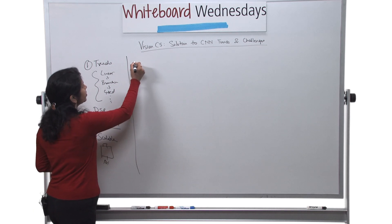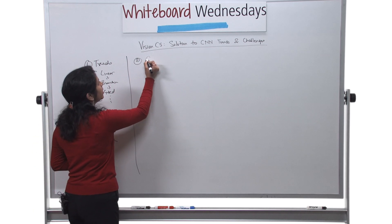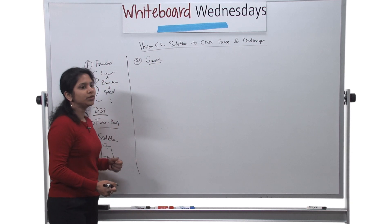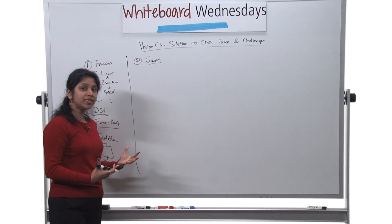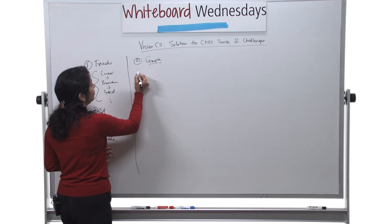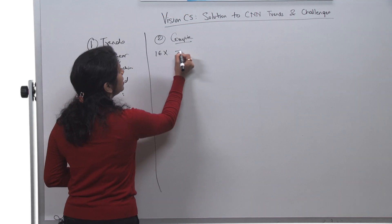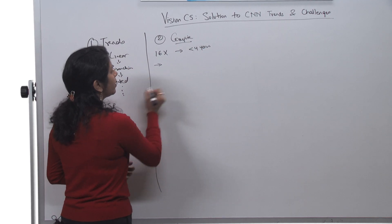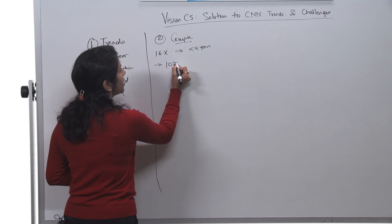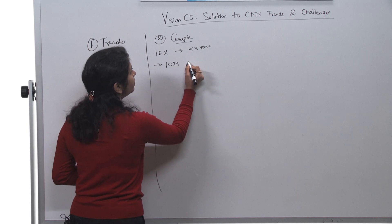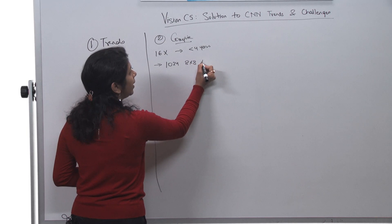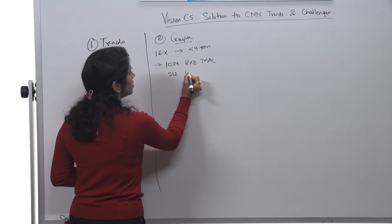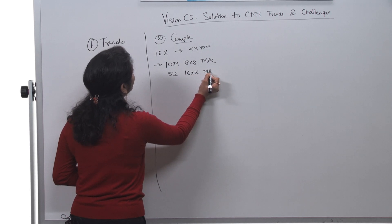Let's go to the next section, which is one of the common challenges we face in CNN, which is the challenge of compute. As we know, the compute requirements are increasing every year, and we have seen they have increased by 16x in less than four years. So to solve those issues, Vision C5 has come up with one of the maximum MAC in the market right now, which is 1024 8x8 MAC.